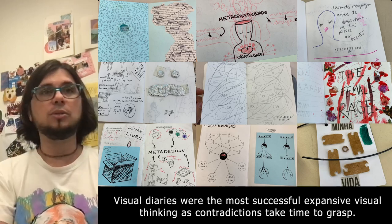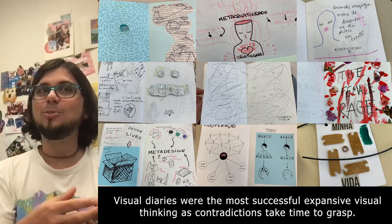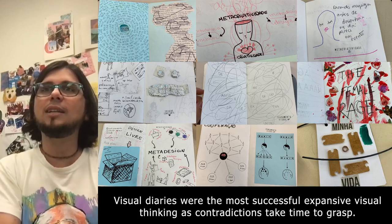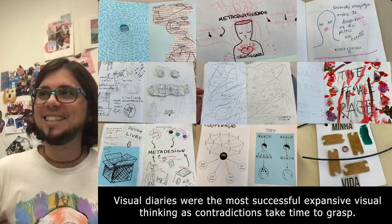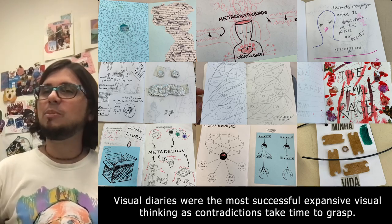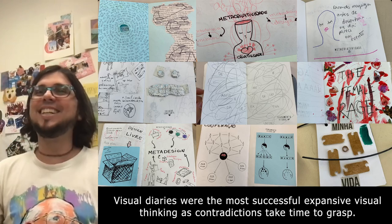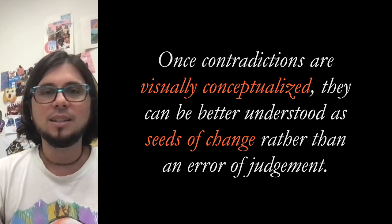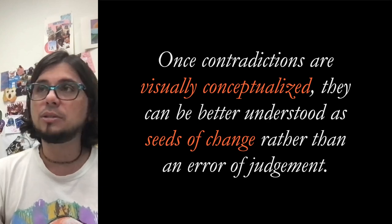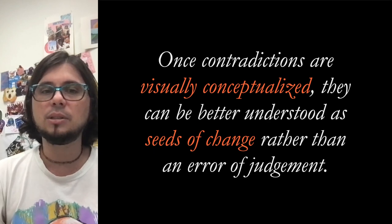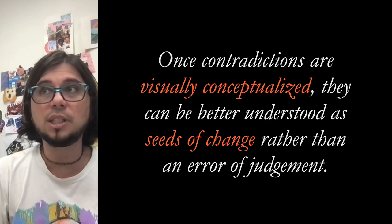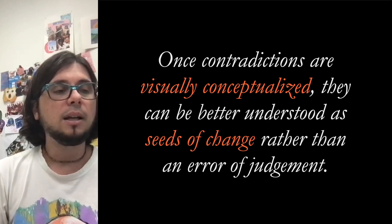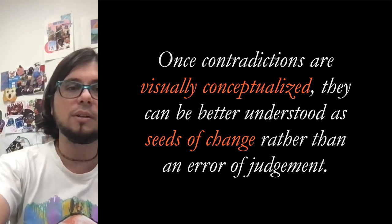I had to evaluate 40 students in this class — how could I do that quickly? If I took their notebooks home, they wouldn't be able to use them for an entire week. So I created a situation where I left them doing all kinds of making in the classroom, and while they were working very playfully, I was grading fast — stamping, stamping, stamping. That's how you manage critical pedagogy in a situation with limited resources. Finally, to wrap up: once contradictions are visually conceptualized, they can better be understood as seeds of change rather than errors of judgment. Contradictions are not enemies — they are your friends, announcing what is to come. They encapsulate the future, and visual thinking is a way of making that more visible.